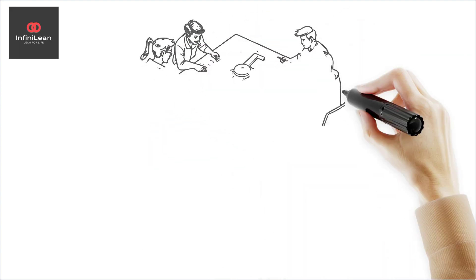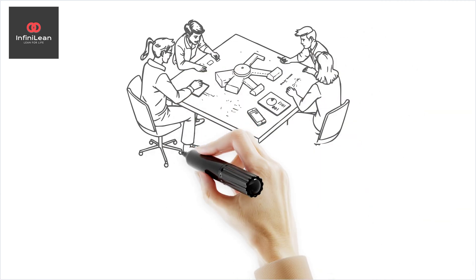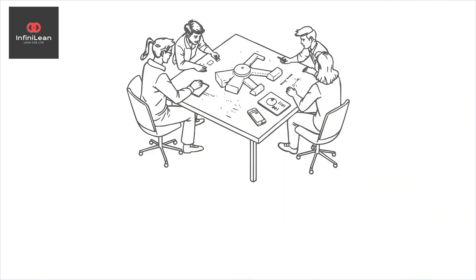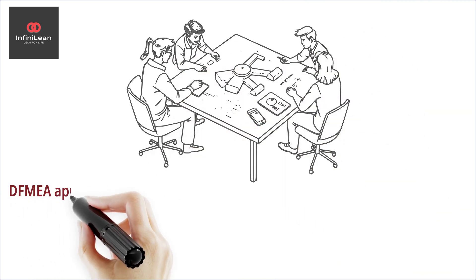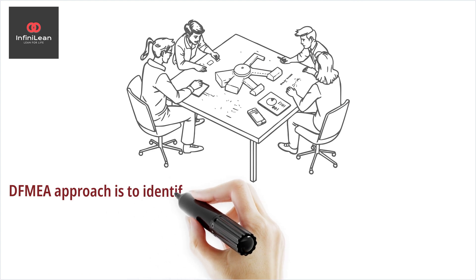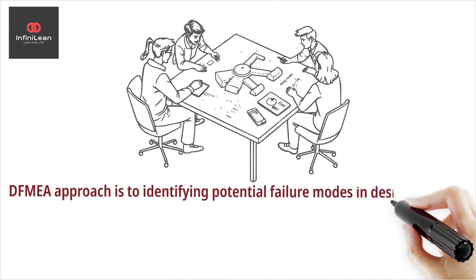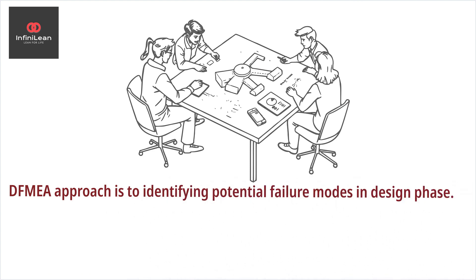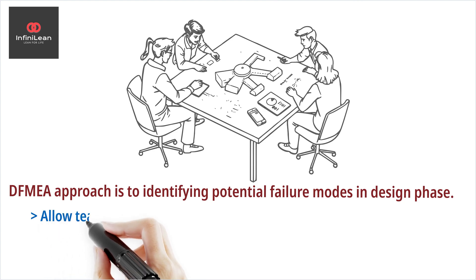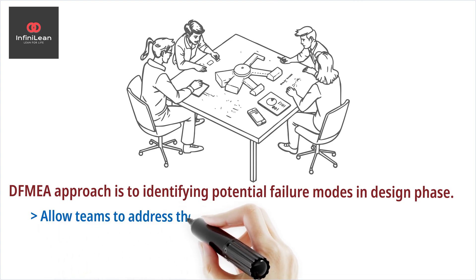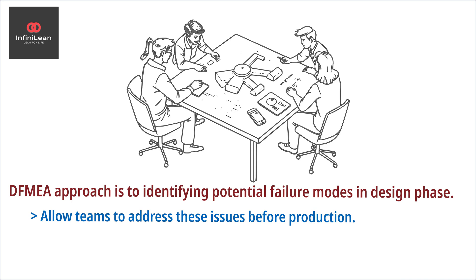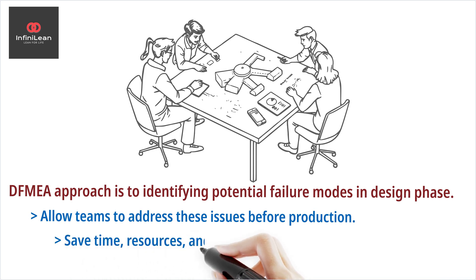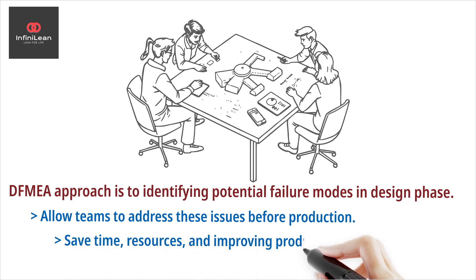DFMEA is a systematic approach to identifying potential failure modes in a product design and assessing their impact on product performance. The aim is to pinpoint areas of potential failure early in the design process. This proactive approach allows teams to address these issues before they reach production, saving time and resources, and improving product quality.